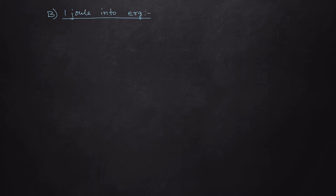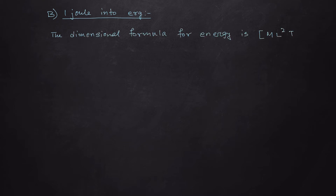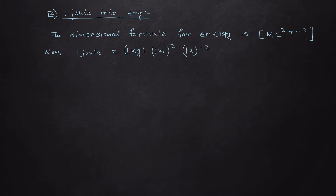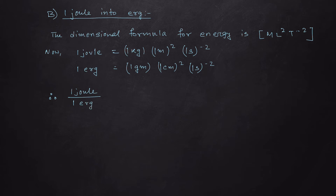Joule is the unit of energy in MKS, and erg is the unit of energy in the CGS system. The dimensional formula for energy is ML²T to the power minus two — you can derive it easily from ½mv² or mgh. So one joule equals one kg × one meter squared × one second to the power minus two. One erg equals one gram × one centimeter squared × one second to the power minus two.